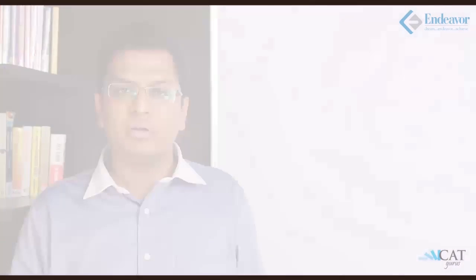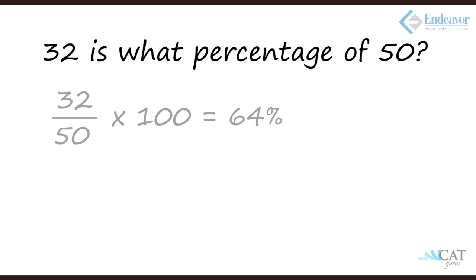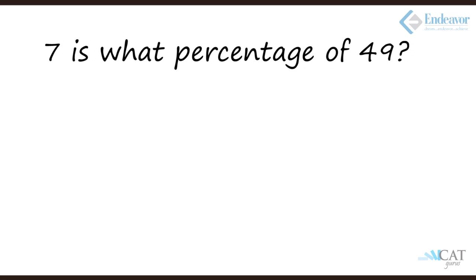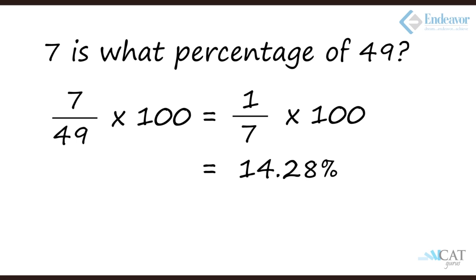Let us try something more. 32 is what percentage of 50? So 32 upon 50 into 100 gives us 64%. 7 is what percentage of 49? 7 upon 49 into 100. Simplifying 7 upon 49 gives us 1 upon 7, which is 14.28%, so directly we can get it.